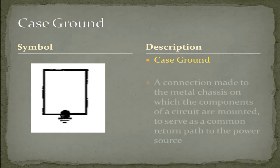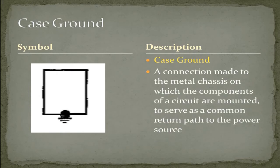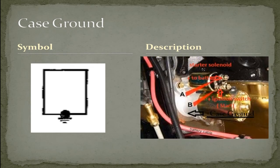The case ground. A connection made to the metal chassis on which the components of a circuit are mounted to serve as a common return path to the power source. In this illustration, I use a starter. As you can see, connection A goes to the battery positive. Connection B goes to the ignition switch start positive. And the starter uses its case as the ground. Along with the starter solenoid uses the starter's case. So that is one illustration of a case ground, one of many.